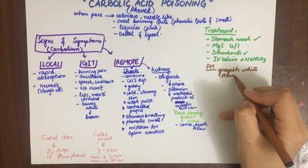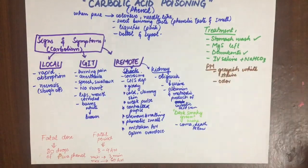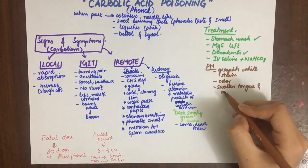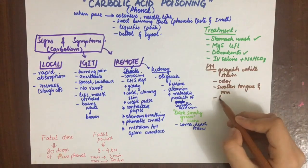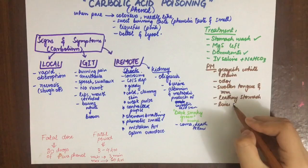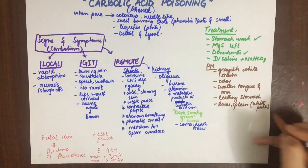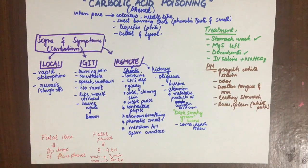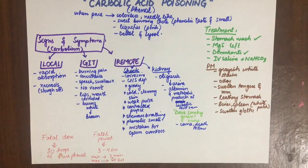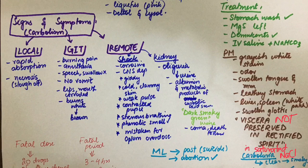In cases of death, post-mortem appearance shows grayish white stains produced by the poison at the angles of the mouth. Odor is usually perceptible. The mucous membranes of the mouth and esophagus are swollen. The tongue is also swollen and white. The stomach looks leathery and the liver and spleen have white patches where they are attached to the stomach. The glottis is swollen. Viscera to be sent to the chemical examiner should be preserved in saturated solution of sodium chloride and not rectified spirit.